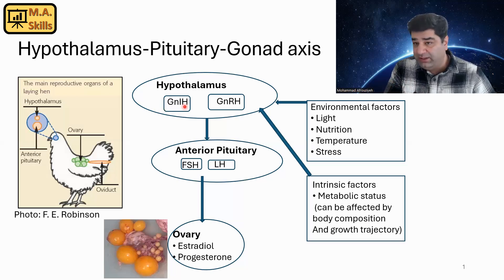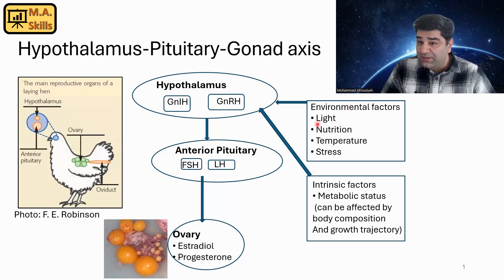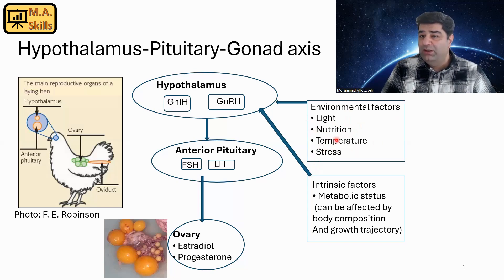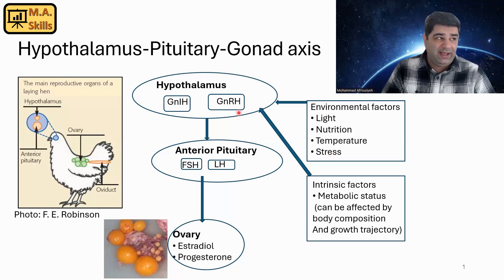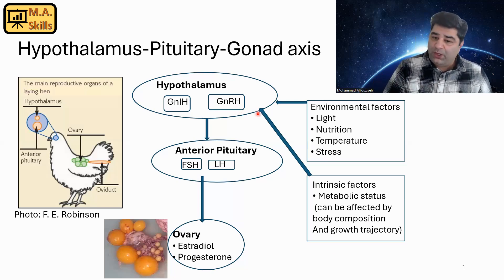Negative effects on the hypothalamus mean GnIH is produced — the brake pedal — which stops laying. That's why we need to optimize these environmental factors: optimize the photo-stimulation process, provide good nutrition, maintain a good temperature in the barn, and avoid any kind of stress. Then we will have secretion of GnRH, acting like a gas pedal, and we will see a good laying phase.